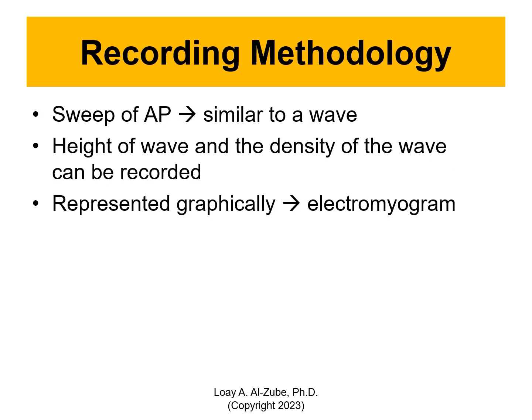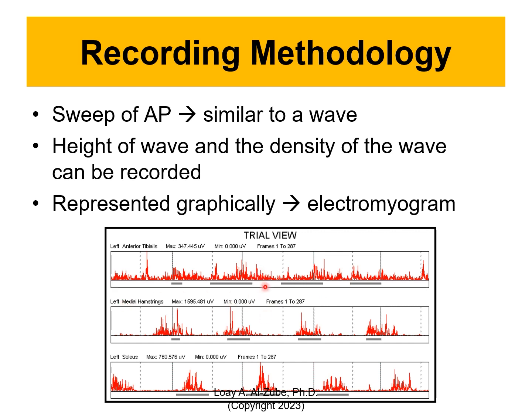The sweep of action potential is similar to a wave, and the height and density of the wave can be recorded through surface EMG and represented graphically. This EMG goes positive and negative; we take the absolute value, which is why you see only the top. That's a practice we do all the time. We look at the maximum value and the density — the frequency of the firing of the EMG contraction. We can extract useful information: this is still raw data but we did processing — absolute value — and now we are looking at it graphically, so we have some information.